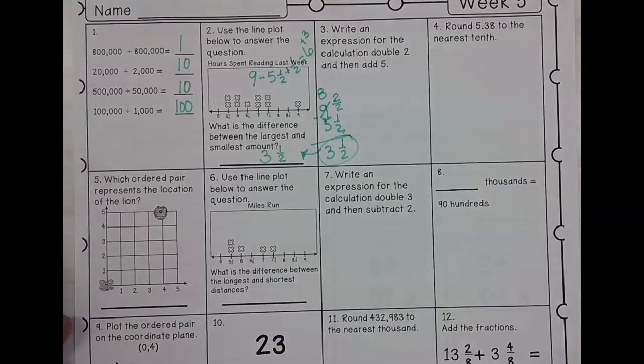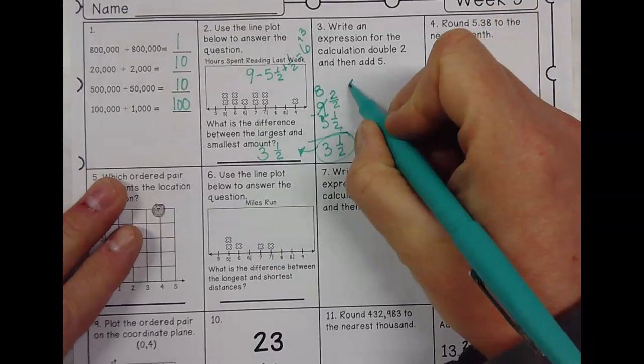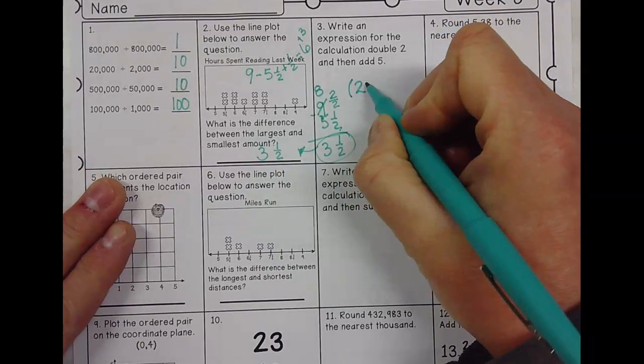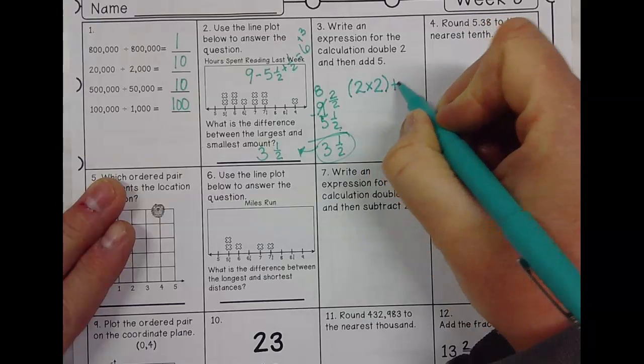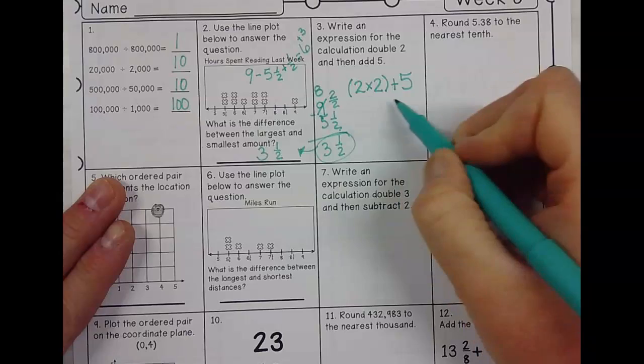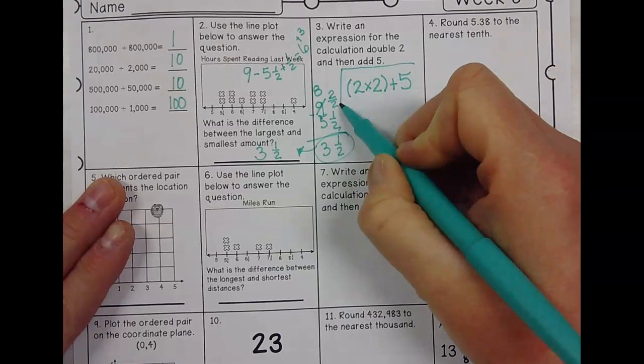All right. Write an expression for calculating double two, then add five. All right. So if I'm going to double two, then I'm going to say two times two, and then I'm going to add five to that. So that would be my expression: two times two plus five.